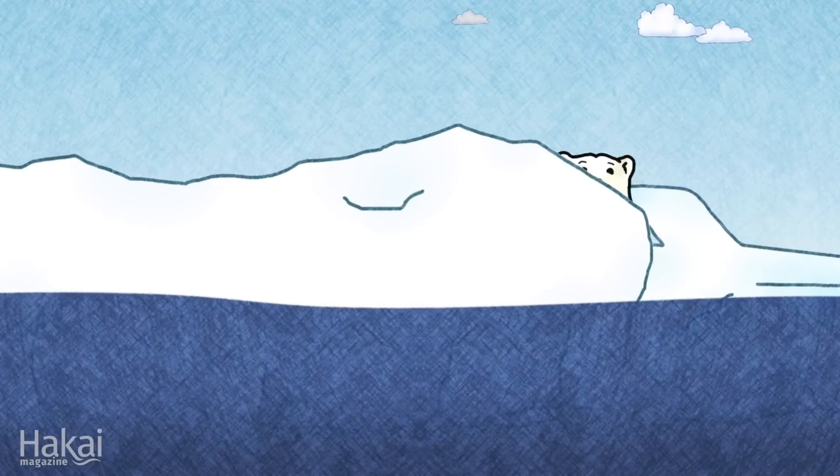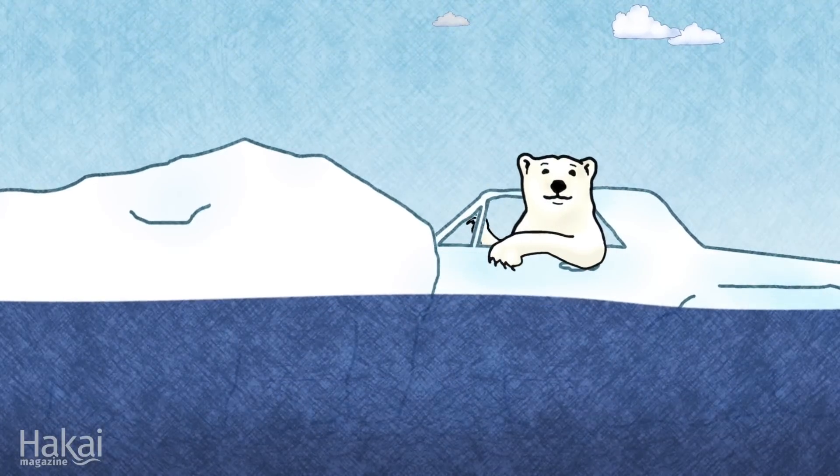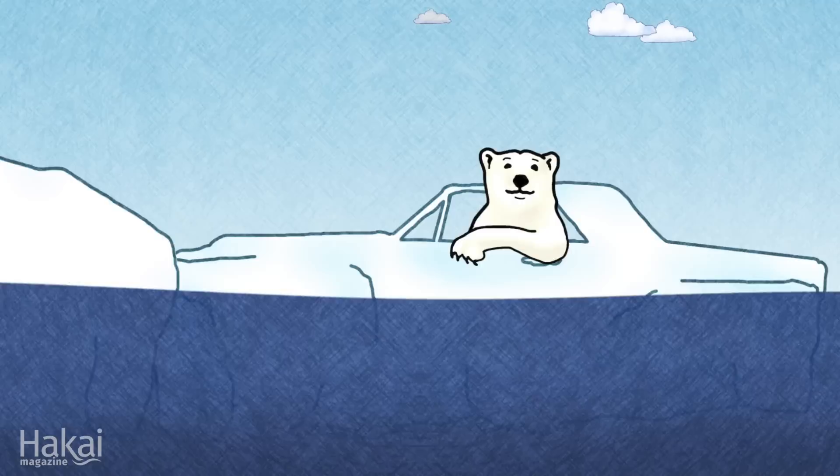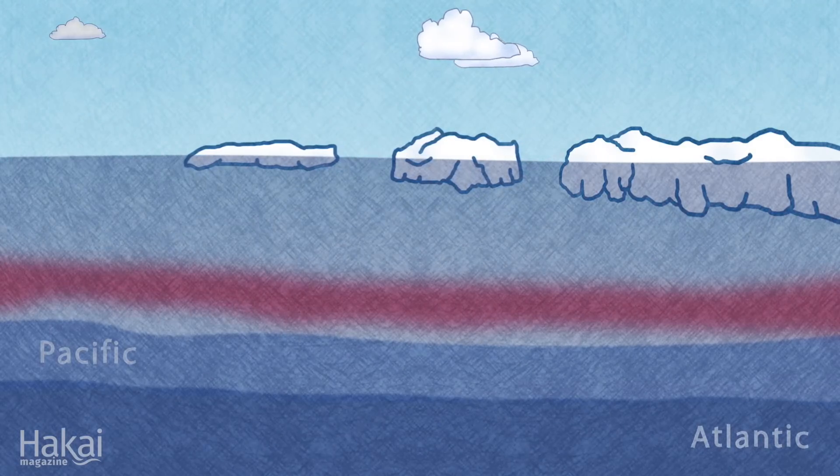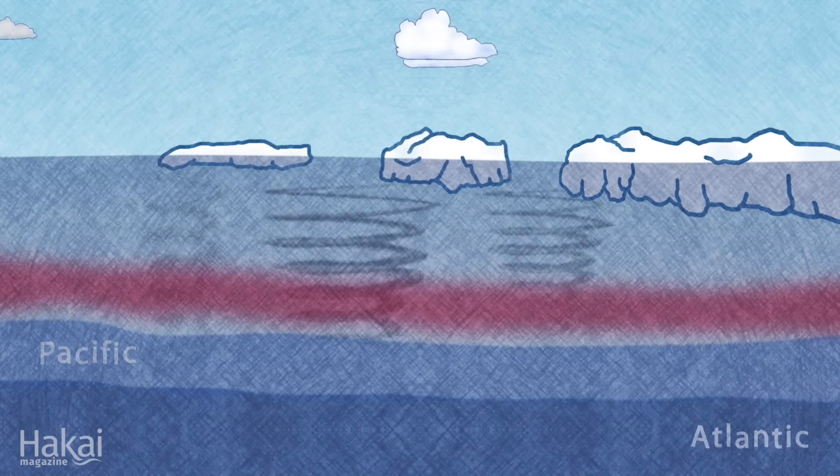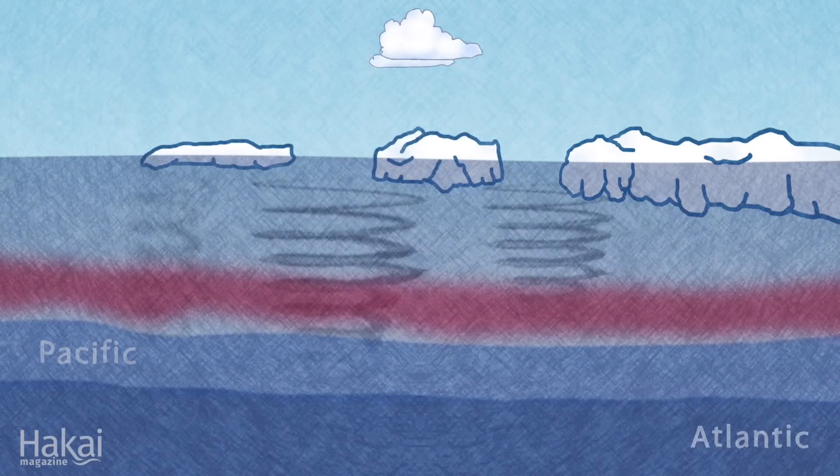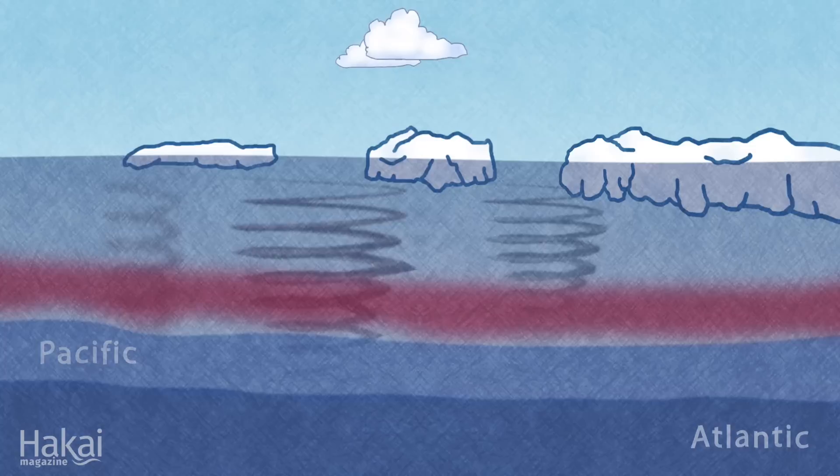Similarly, these smaller ice flows can move faster and easier across the ocean. Increasing winds combined with these faster-moving ice flows are stirring the ocean below, mixing the colder surface water with the warmer layers beneath it.